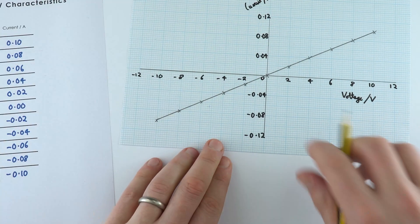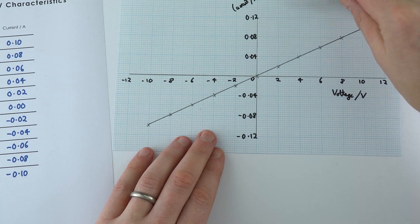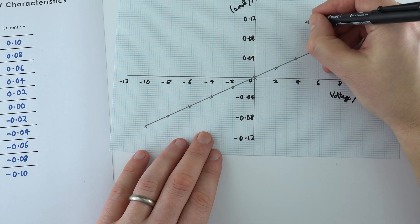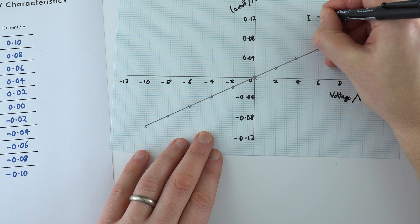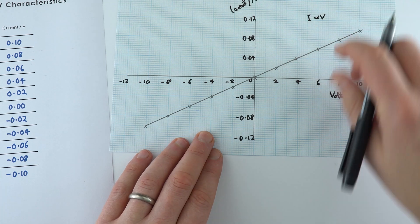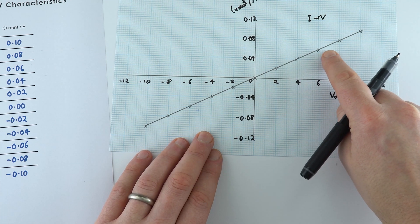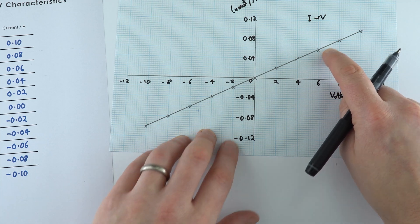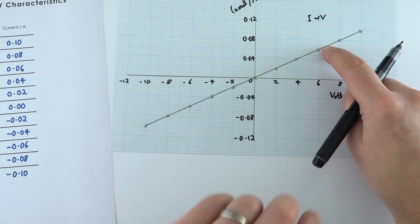This is what we call the IV characteristic for a resistor. This shows that the current is directly proportional to the voltage, which means this obeys Ohm's law. If you were to double the potential difference, we'd also double the current through it.